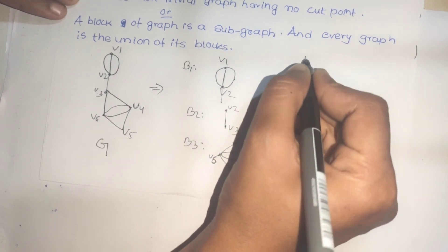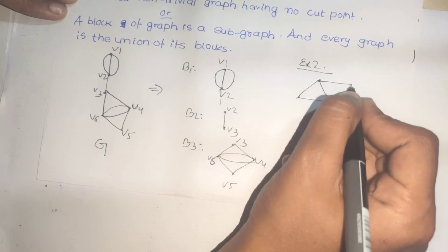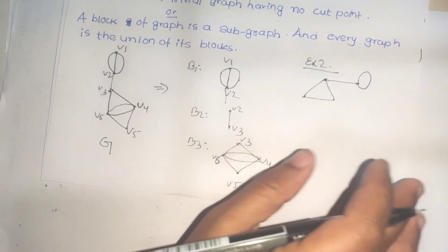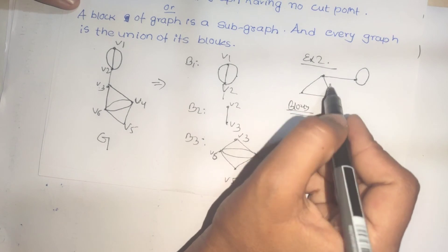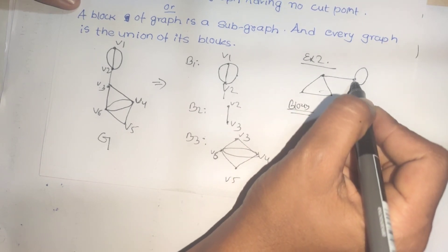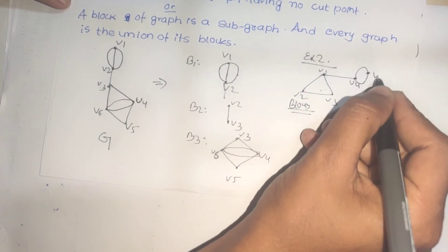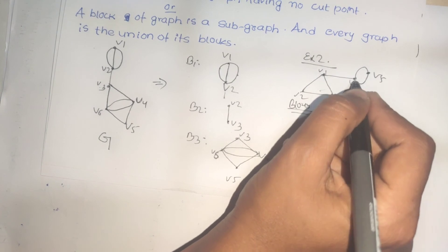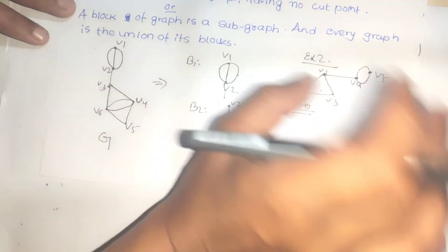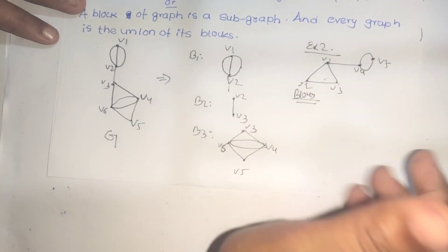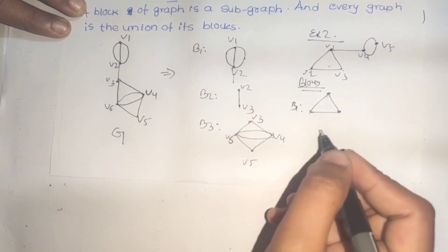Now for example 2, we have a simple graph with vertices B1, B2, B3, B4, and B5. When we identify blocks in this graph, we find B1, then B2, and B3. If we remove B3, B2, and B5, the graph disconnects.